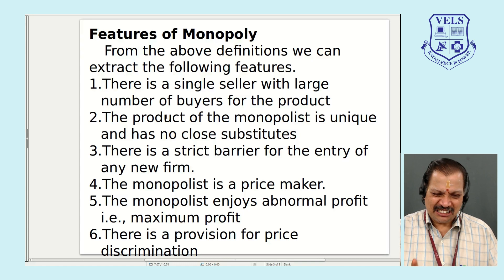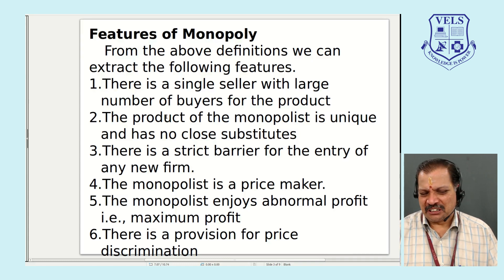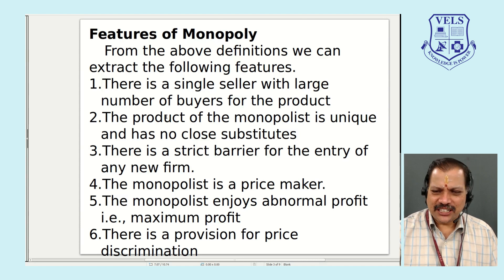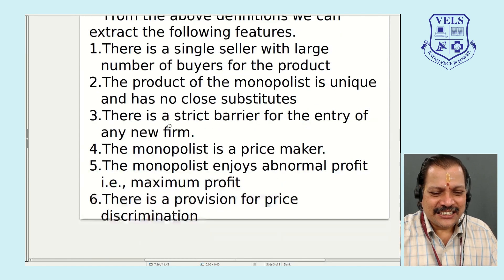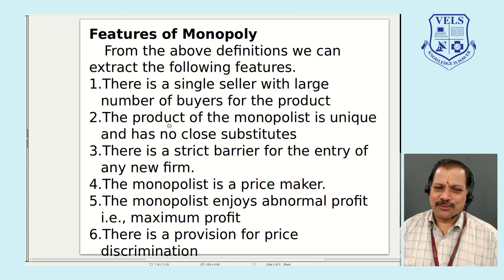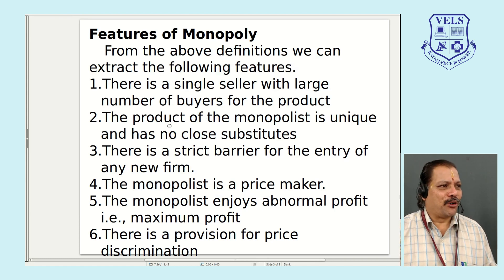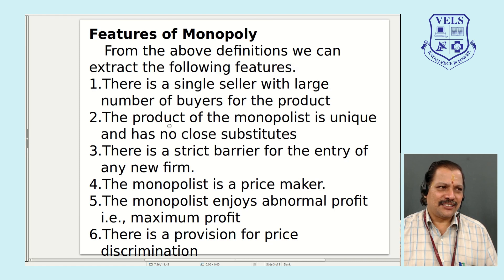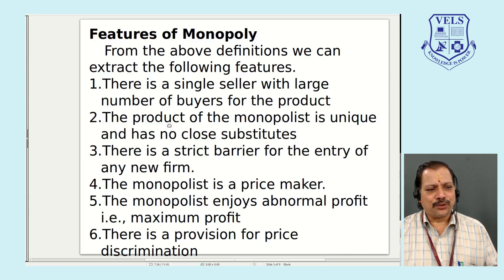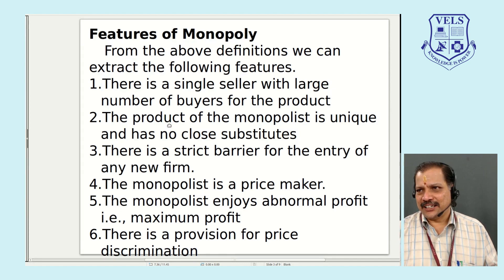The sixth and unique feature of monopoly is price discrimination — there is a provision for price discrimination. To summarize the six features: first, number of buyers and sellers; second, the product; third, entry of firm; fourth, the price; fifth, the profit; and finally, the unique feature — price discrimination.